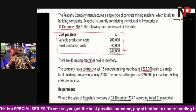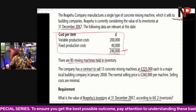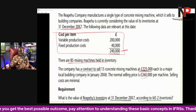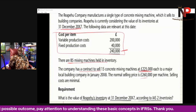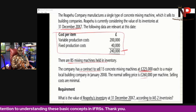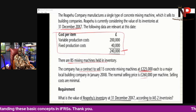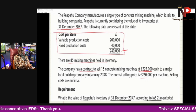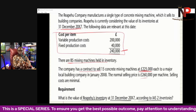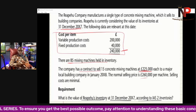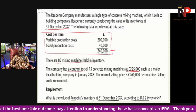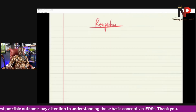One thing you need to understand is that IAS 2 states that when determining the value at which closing stock will be carried, any inventory that will be sold under contract — its carrying amount should be determined separately from the other inventories. So we are going to be doing that here.